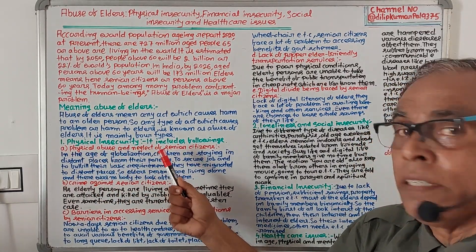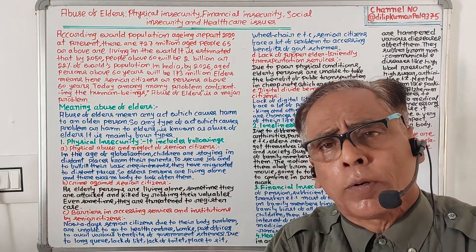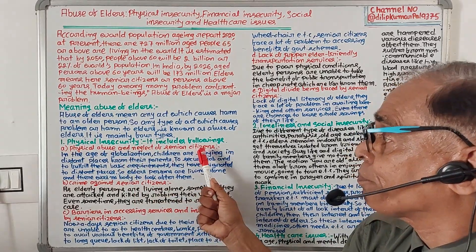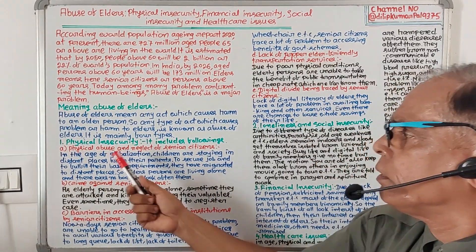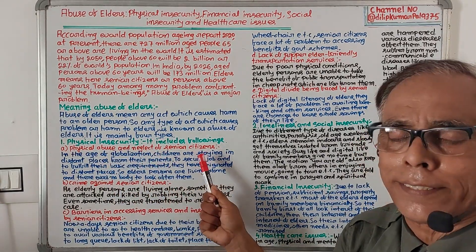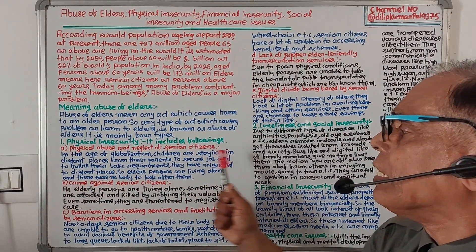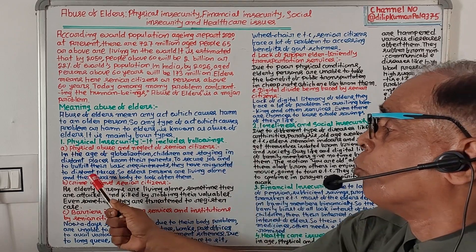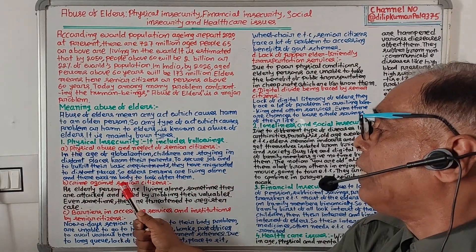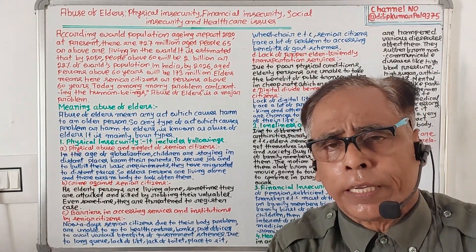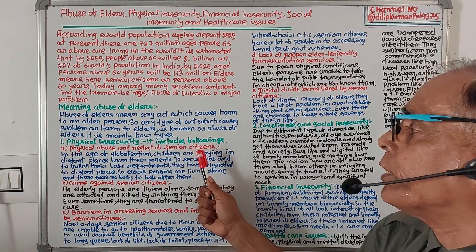Number one is Physical Insecurity, which includes physical abuse and neglect of senior citizens. In the age of globalization, children are staying in distant places from their parents to secure jobs and fulfill their basic requirements. Elder persons are left living alone with nobody to look out for them. This physical abandonment is a form of physical abuse.